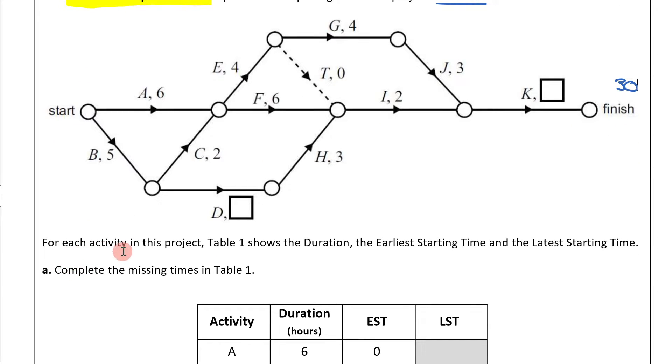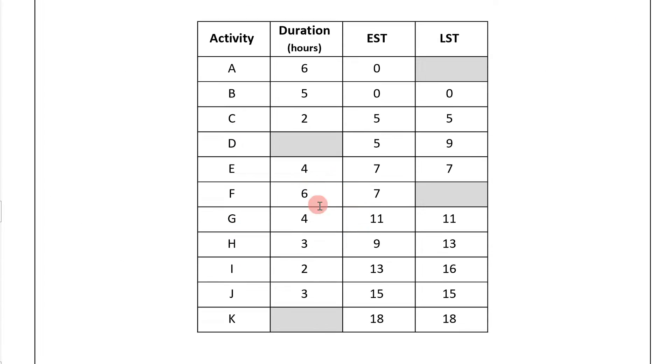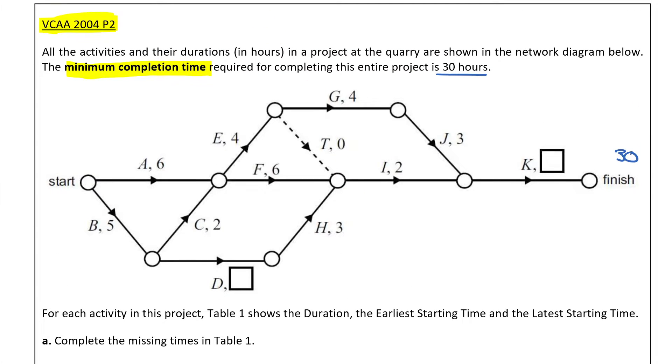It now says for each activity in this project, Table 1 shows the duration, the early starting time, and the later starting time. Complete the missing times in Table 1. So what I'm going to do here is I'm going to begin with my forward and backward scanning. Start with forward scanning, put a zero to begin with, and now let's go. Grab a green pen and we start forward scanning.